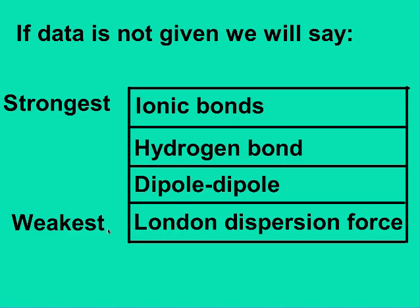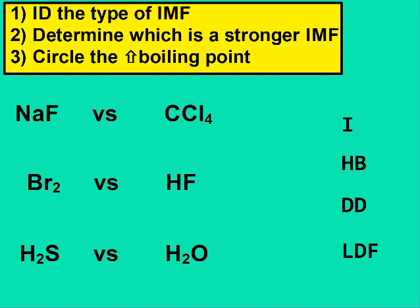Ionic is going to be the strongest, London is going to be the weakest. So the first thing you're going to do is identify the type of IMF found in each compound, then determine which has the stronger IMF, and then circle the one with the higher boiling point.